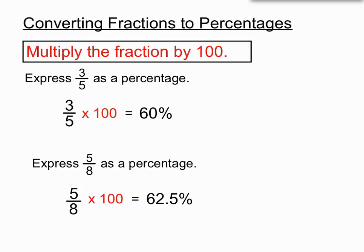We don't get a whole number here, but we get 62.5 on our calculator, and we'll add our own percentage sign there. So we're just taking the fraction and comparing it to 100, because 100 has a lot to do with percentages. So we've converted 3 fifths and it's become 60%, and 5 eighths and it's become 62.5%. There we have converting fractions to percentages — multiply by 100.